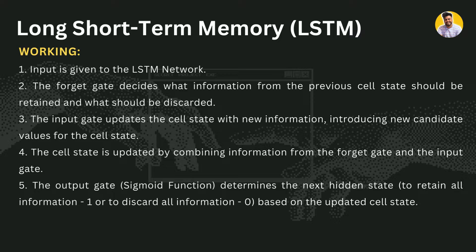The complete working of the LSTM network is as follows: it starts with the input given to the network, then the forget gate decides what information from the previous cell should be retained or discarded. The input gate updates the cell state with new information, introducing new candidate values. The cell state is updated by combining the forget gate and the input gate. Finally, the output gate has a sigmoid function that determines the next hidden state — whether to retain or discard information based on the updated cell state.